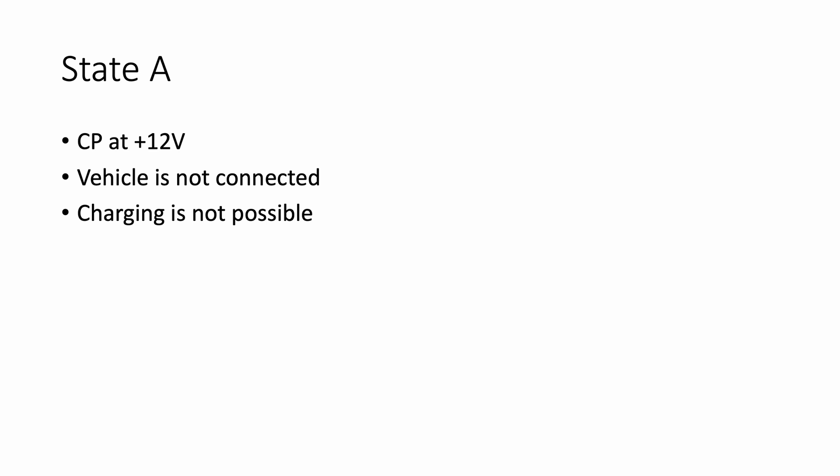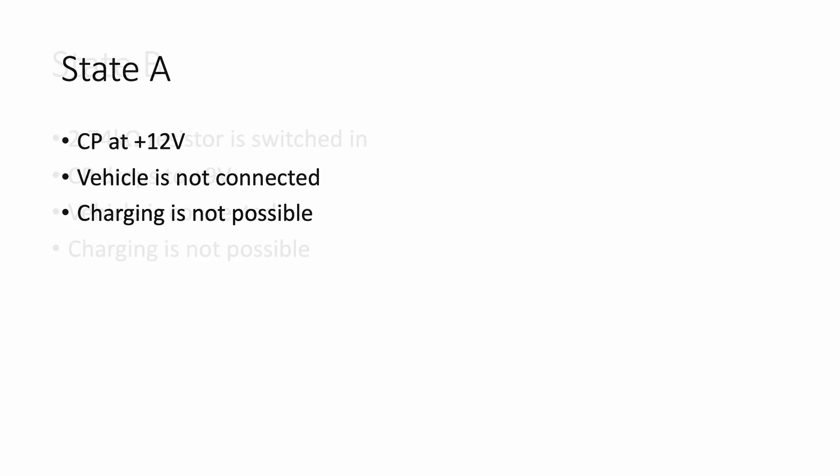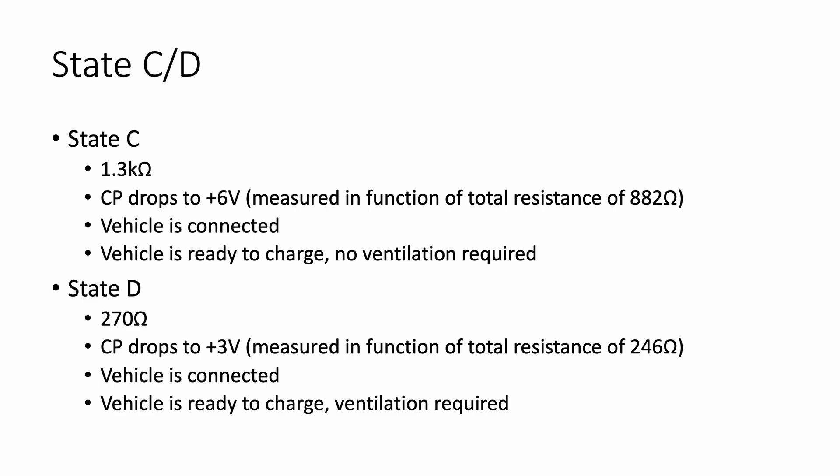Let's dive deeper into what each state means. In state A, the device outputs a constant 12 volts, indicating the car is not connected. Moving to state B — when we plug in the car — an additional resistor of 2.74 kΩ is switched in, letting the device know a car is connected, and the voltage drops to 9 volts. The state is regulated by the height of the voltage. When the car starts charging, it switches in either a 1.3 kΩ resistor (dropping to 6 volts) or a 270 Ω resistor (dropping to 3 volts) — that is the difference between state C and state D.